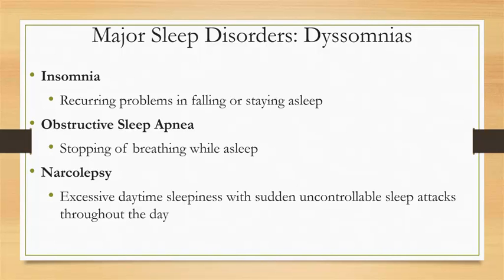Narcolepsy is considered a lifelong and chronic condition. The onset can occur at any age. Although genetics may play a role, about 10% of people with narcolepsy have a relative with the same symptoms, while most people with the disorder have no family history. Research points to multiple factors in the development of narcolepsy, including chromosomal, brain, neurotransmitter, and immune system abnormalities.